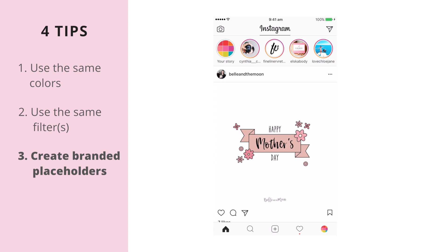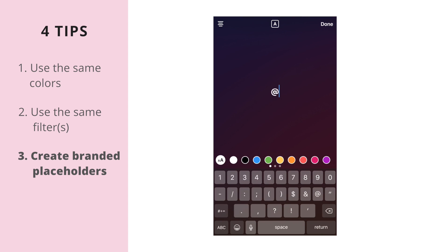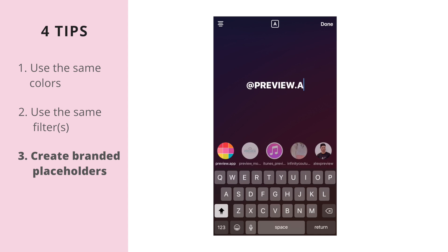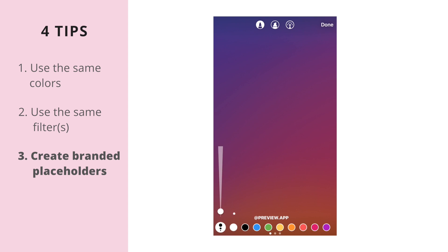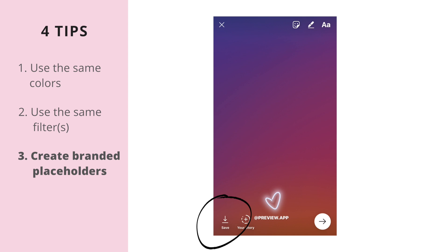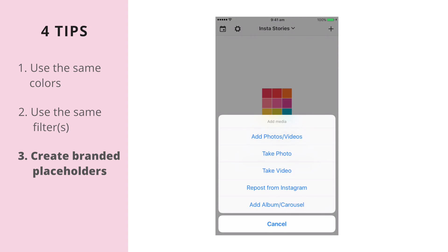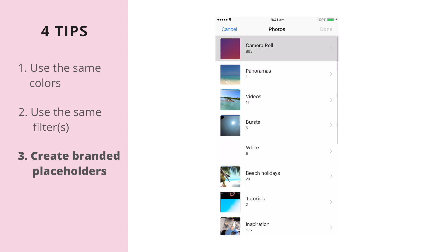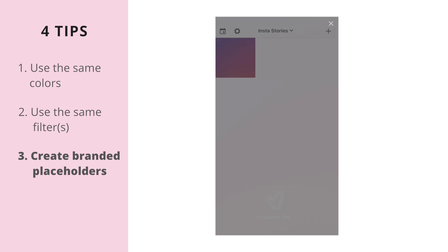The second way you can prepare a placeholder is to go directly into Instagram Instastories. You just prepare your Instastory but you don't share it — instead, just press save and it will be saved into your camera roll. Then go inside of Preview app, add your placeholder, and you can just schedule your Instastory, add your caption — for example, the text that you would like to add on top of the placeholder in the future. And you're all set.